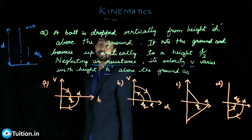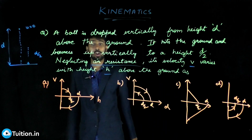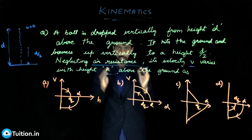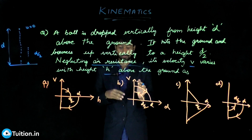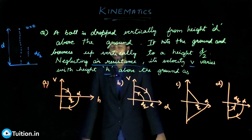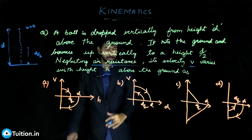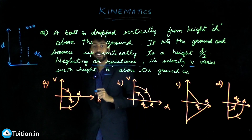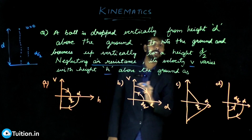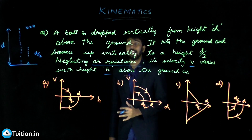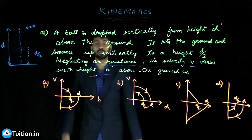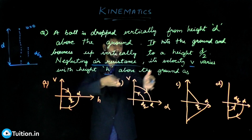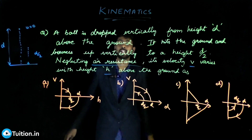What you need to understand is that a lot of times you don't have to fully derive the equation. The more you understand it the better, but sometimes all you need to do is understand these graphs, understand the motion, and just choose the appropriate graph without actually writing the entire function for each option.